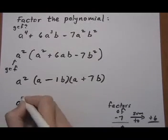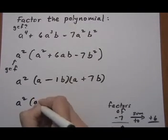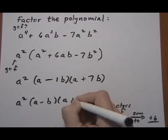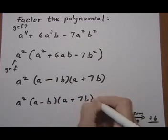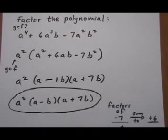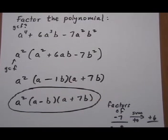And I would write the final answer without the 1 there. I'm not sure if MyMathLab would mark that wrong with the 1 or not. But it's a good habit to get into to not write unnecessary 1s. So there we go. Final answer is a² times (a - b) times (a + 7b).